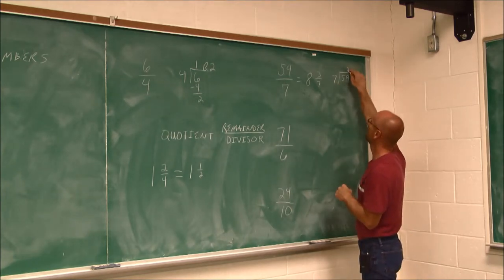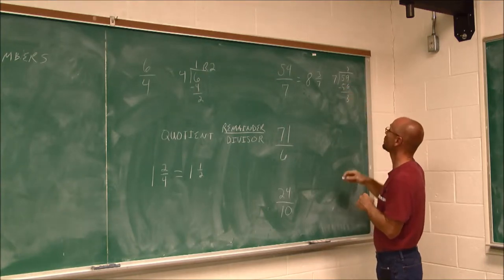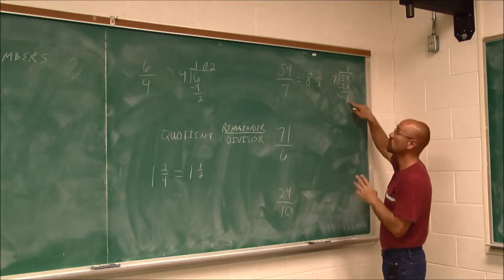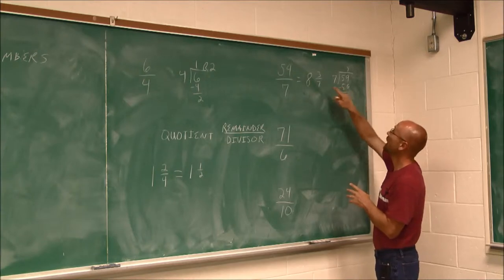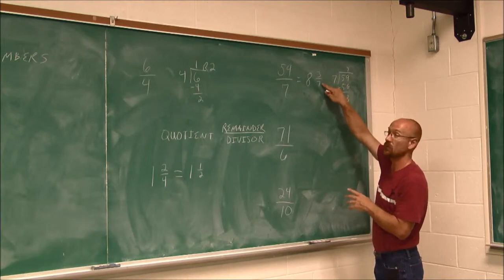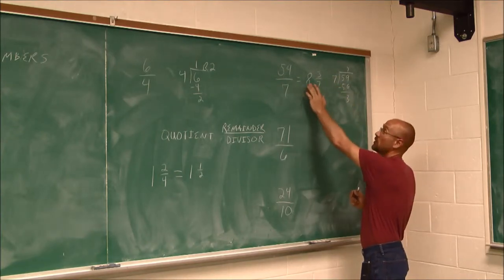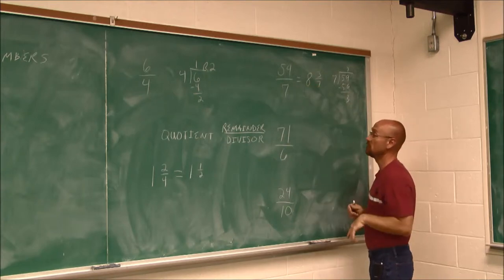7 goes into 59 eight times. We find that difference to be 3. That's our remainder. So we rewrite it as 8 and the remainder over the divisor, 8 and 3 sevenths. So you can do it both ways. The more you do it, the quicker you'll be able to move to this method.